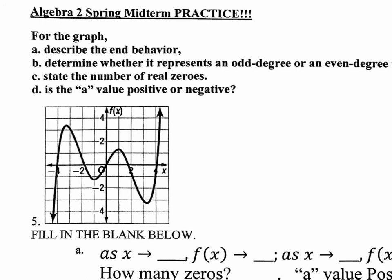On this one, they ask us to analyze a graph. They want us to describe the end behavior, determine whether it represents an odd or even degree function, and state the number of real zeros and whether the a value is positive or negative. This is an odd degree function because one end goes down and the other goes up. If it were even, both ends would go up or both down.